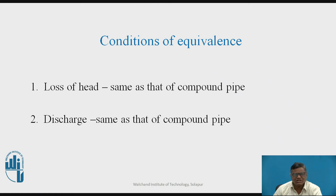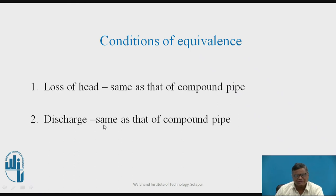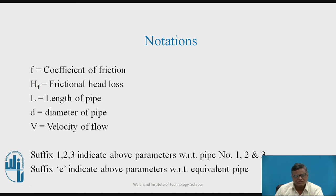Now the conditions of equivalence. There are two conditions. The first condition is that the loss of head of the equivalent pipe should be the same as that of the compound pipe. The second condition is that the discharge through the equivalent pipe should be the same as that of the compound pipe. The notations used for this derivation are: f = coefficient of friction, Hf = frictional head loss, L = length of pipe, D = diameter of pipe, V = velocity of flow. Suffixes 1, 2, 3 indicate parameters for sections 1, 2, 3 of the compound pipe, and suffix e denotes parameters for the equivalent pipe.